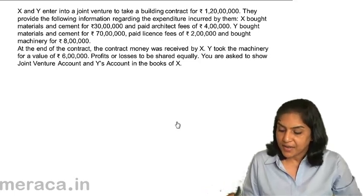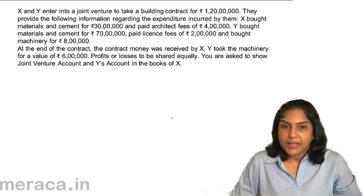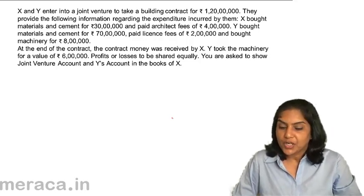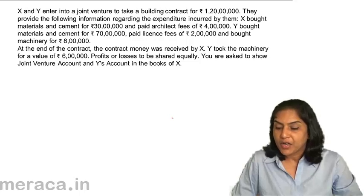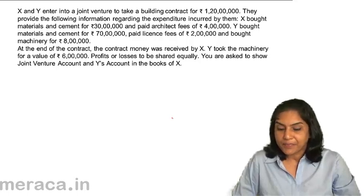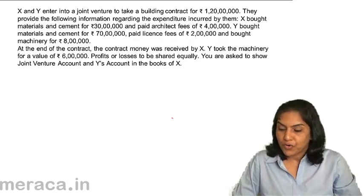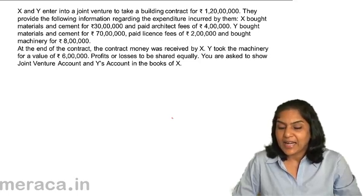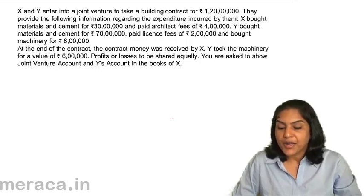We will take the same example that we did in the earlier method. X and Y enter into a joint venture to take a building contract for 1 crore 20 lakhs. They provide the following information regarding the expenditure incurred by them. X bought materials and cement for 30 lakhs, paid the architect for 4 lakhs, so X spent 34 lakhs. Y spent 80 lakhs — 70 lakhs for cement, license fees 2 lakhs, and machinery for 8 lakhs.